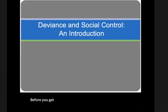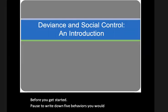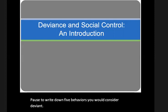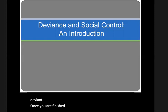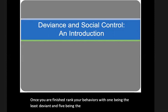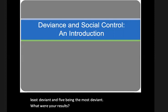Before you get started, pause to write down five behaviors you would consider deviant. Once you are finished, rank your behaviors with one being the least deviant and five being the most deviant. What were your results? Keep these in mind as you move through the lecture.